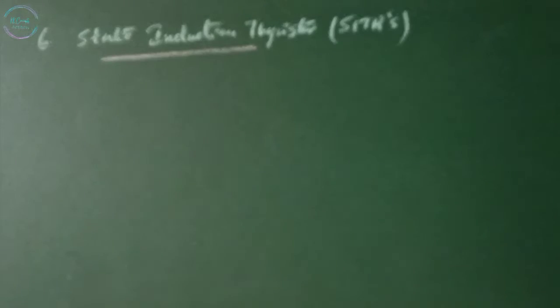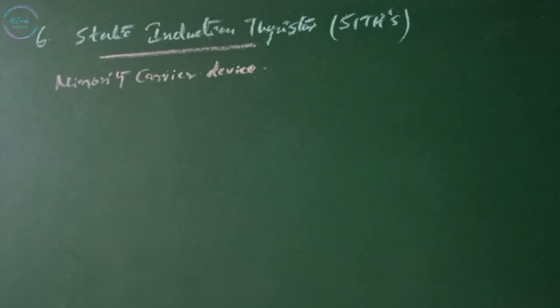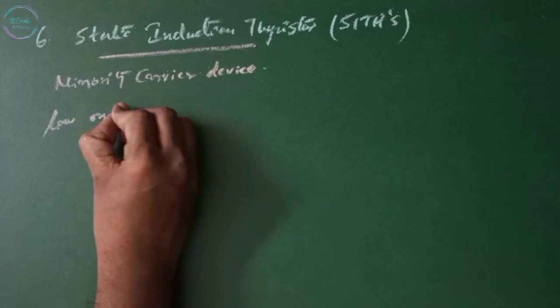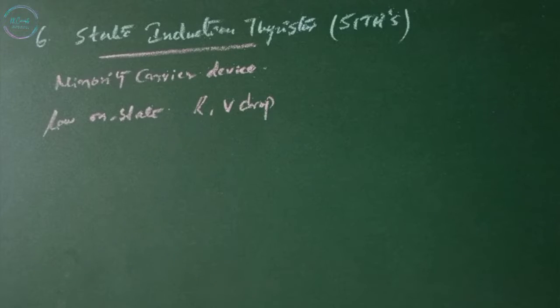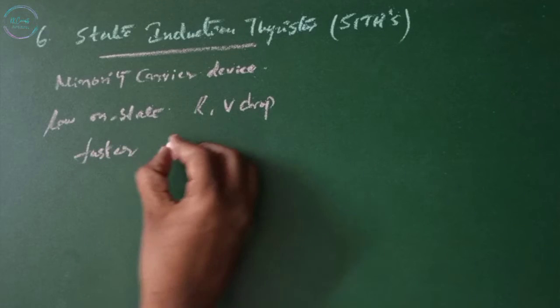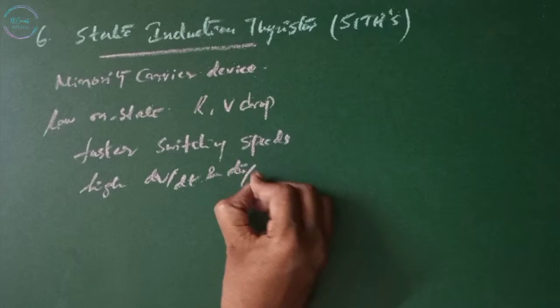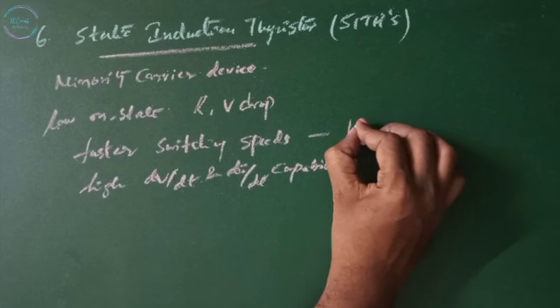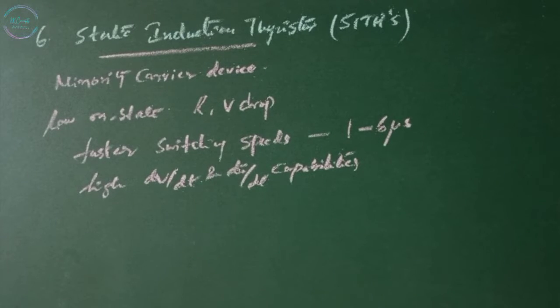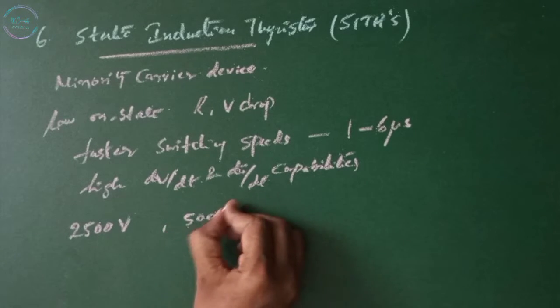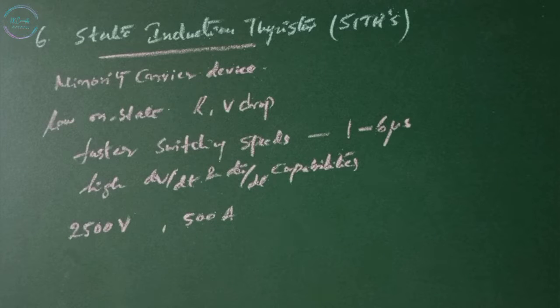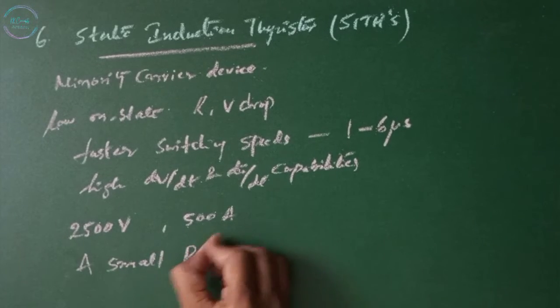Static induction thyristor SIT-H. A SIT-H is a minority carrier device having low on-state resistance and voltage drop and it can be made with high voltage and high current ratings. It has good dV/dt and dI/dt capabilities. The switching speed is approximately 1 to 6 microseconds. The voltage rating is near about 2500 volts and current rating is limited to 500 amps. This device is extremely process sensitive. A small perturbation in the manufacturing process would produce major changes in the device characteristics.